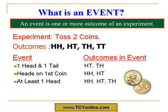Getting heads on the first coin is also an event, and the outcomes for this event are head-head and head-tail. Similarly, getting at least one head on tossing two coins is also an event, and the outcomes for this are head-head, head-tail, and tail-head. Next, getting heads on both coins is also an event, and the possible outcome for this event is head-head.